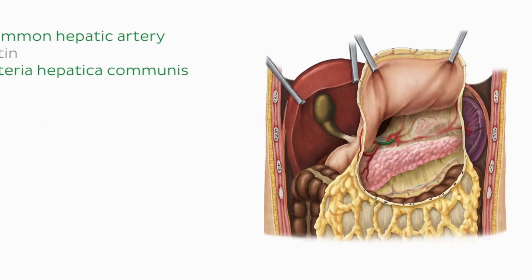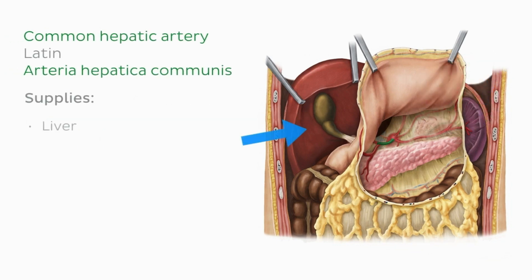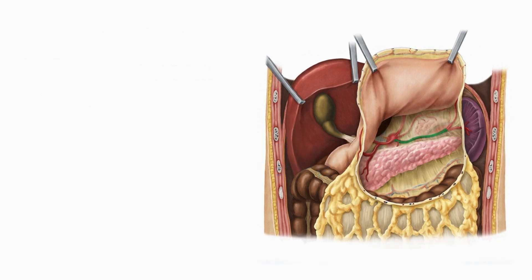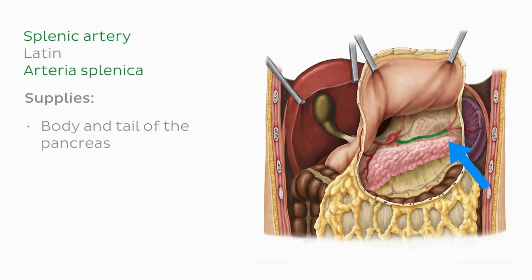The common hepatic artery is a branch of the celiac trunk responsible for supplying the liver, the duodenum, and surrounding structures — we'll explore its branches later. The splenic artery courses along the superior margin of the pancreas and supplies the body and tail of the pancreas and the spleen.